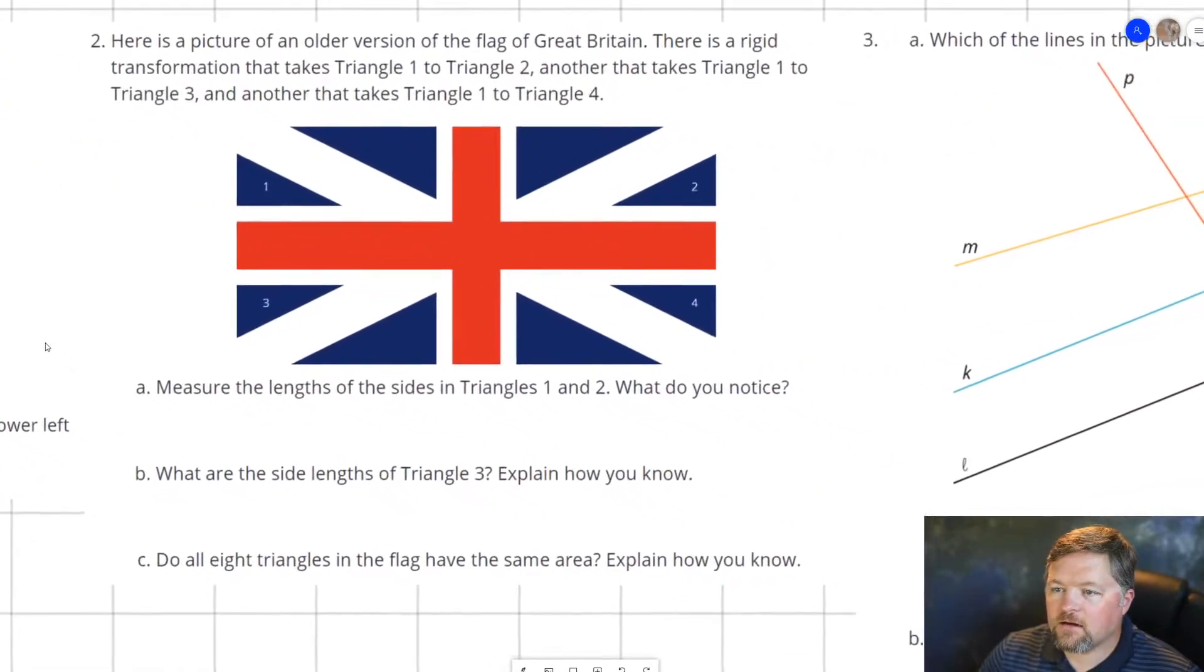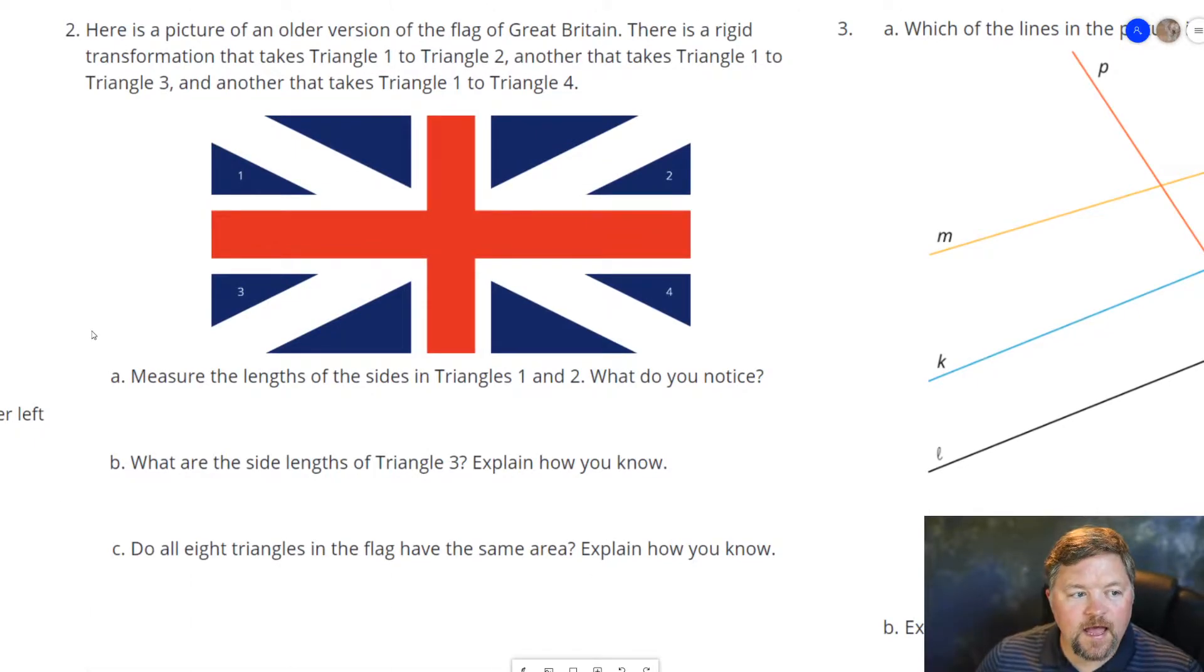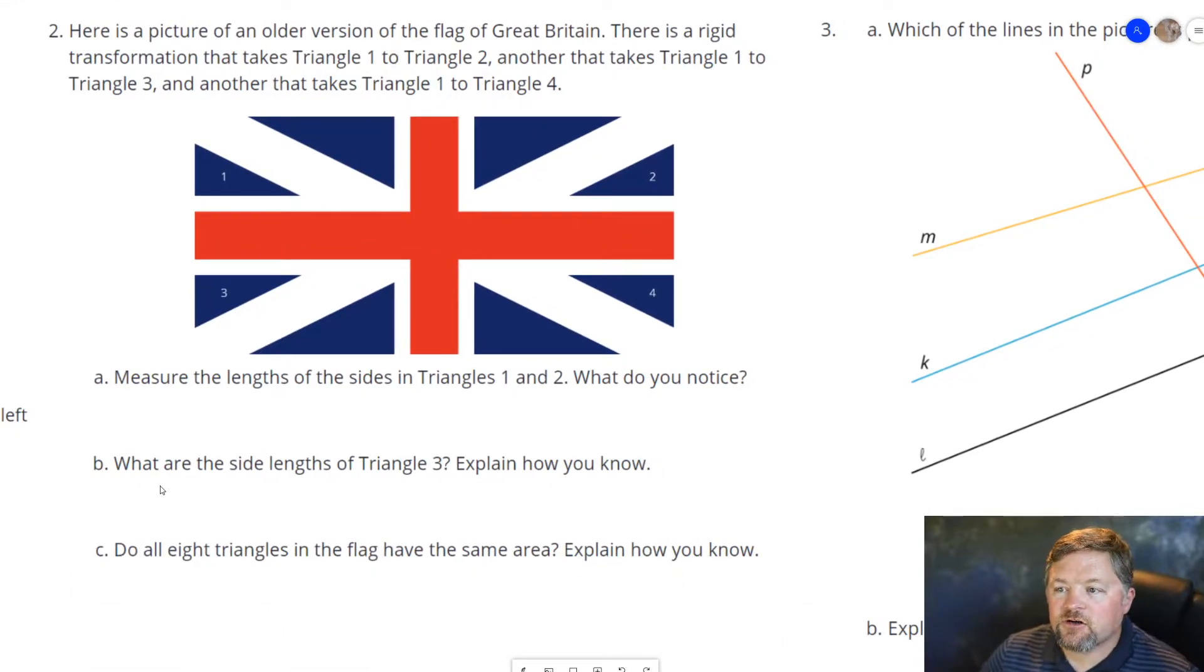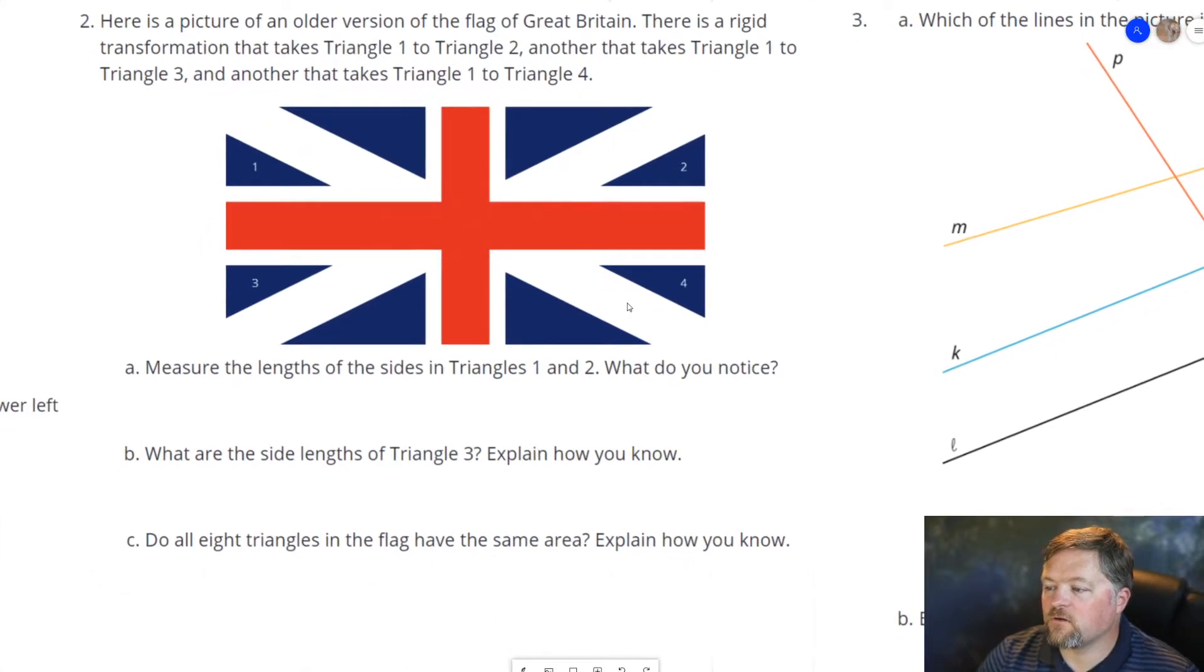Okay, and what's next? Another flag. Here's a picture of an older version of the flag of Great Britain. There is a rigid transformation that takes triangle 1 to triangle 2, another that takes triangle 1 to triangle 3, and another that takes triangle 1 to triangle 4. Measure the lengths of the sides in triangles 1 and 2. What do you notice?